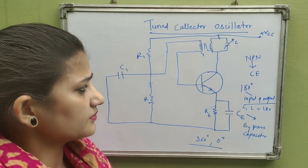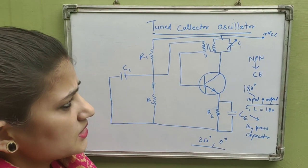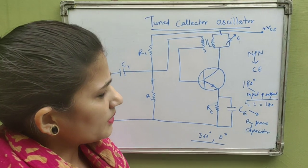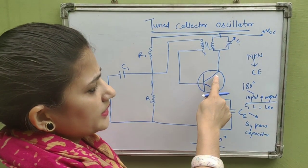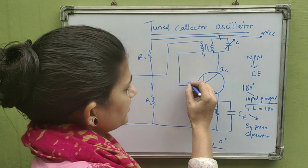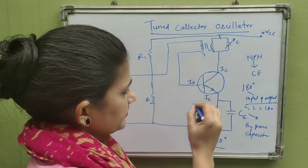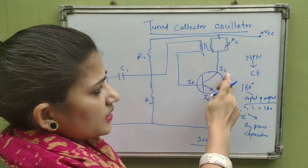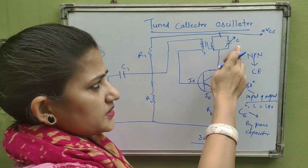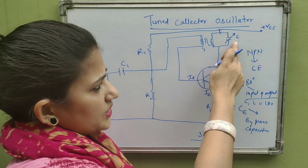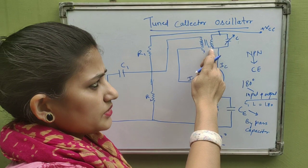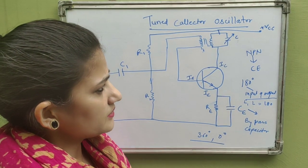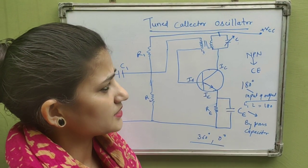The working of the tuned collector oscillator: when VCC is supplied, the collector current IC, base current IB, and emitter current flow. As IC increases, it charges the capacitor. When the capacitor is fully charged, it discharges through inductor L, producing a frequency of oscillation in the tank circuit.